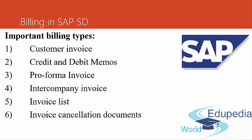The next billing type is the invoice list. Some customers prefer to receive a periodic statement listing details of all billing documents created in a certain period — this document is called an invoice list. You can combine one or more billing documents in an invoice list. In large groups of companies, there can be several sold-to parties but a common payer. In such cases, a periodic invoice list is issued to the payer, who makes payment on behalf of the entire group. The group payer internally collects the amount from each sold-to party, and in some cases the payer is given a discount called a factoring discount for these services.